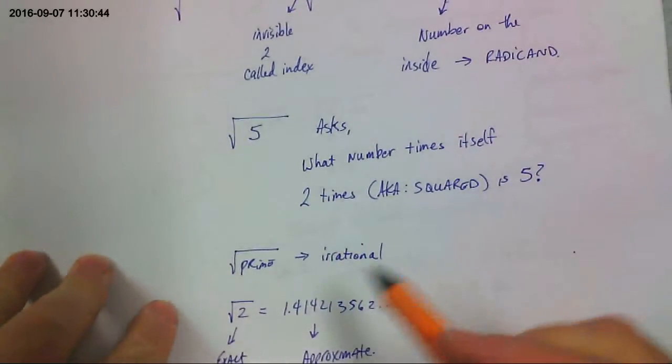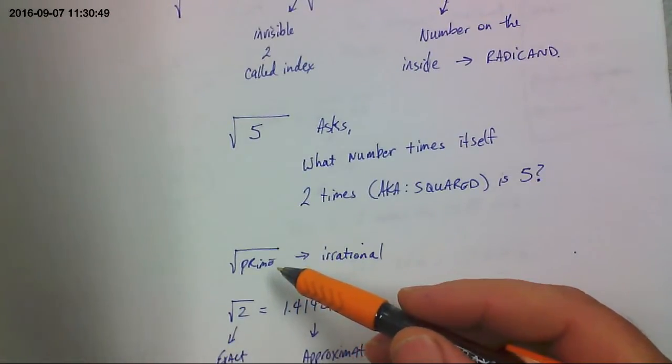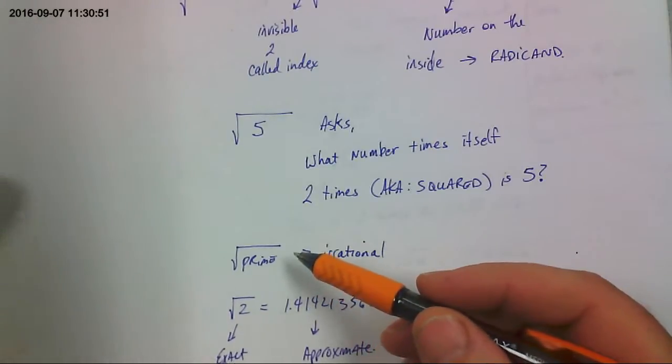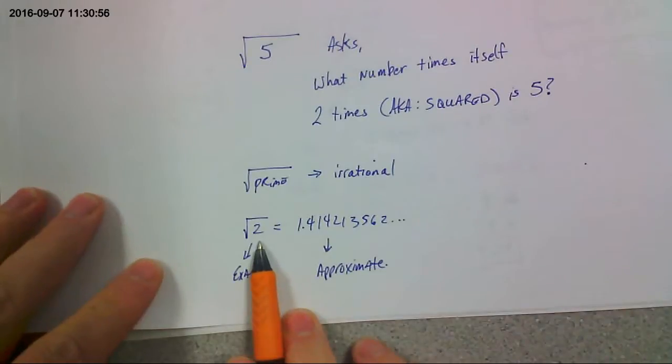Prime numbers. If you have a square of a prime number, and a prime number is a number that has two factors exactly, one and itself. If you have a square root of a prime number, it's called irrational.